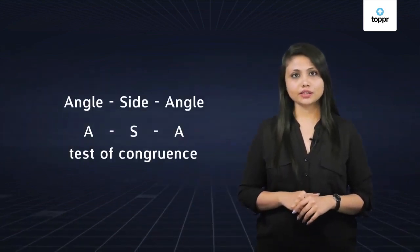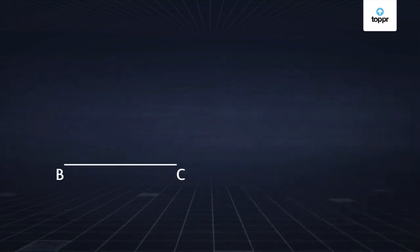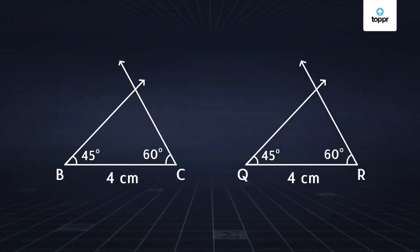Imagine that we are given two line segments BC and QR of the same length, say 4 centimeters. Let's now construct angles of measure 45 degrees each at points B and Q, and angles of measure 60 degrees each at points C and R as shown. The rays of these angles intersect as shown.